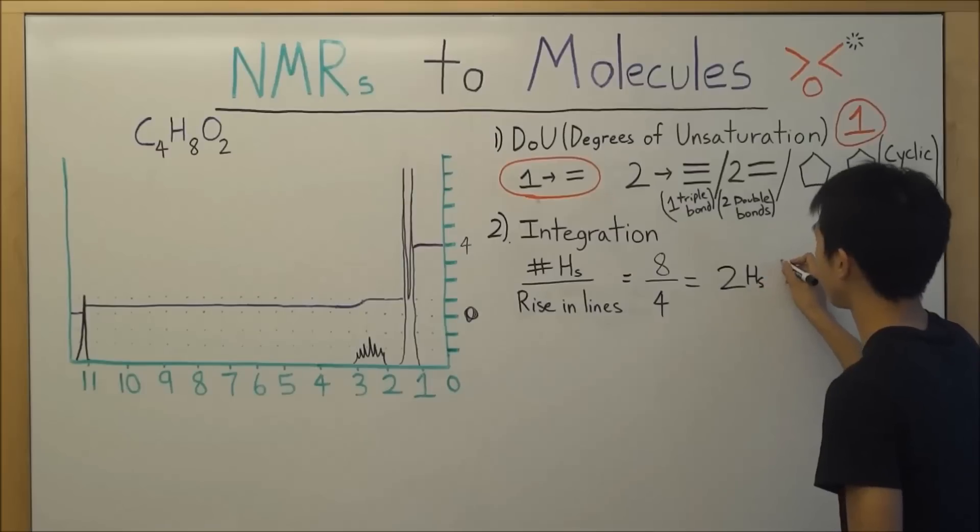It's basically four, right? So that basically tells us that in our NMR we have two hydrogens represented by each line.